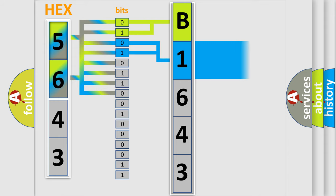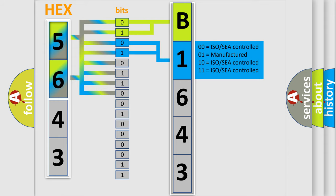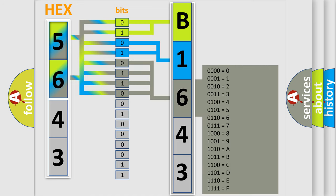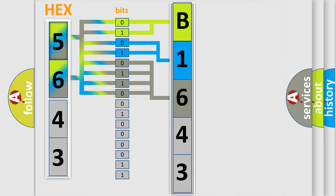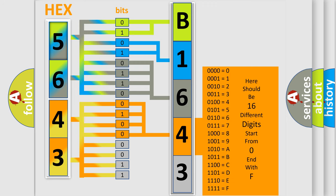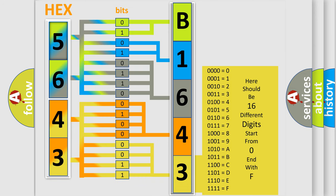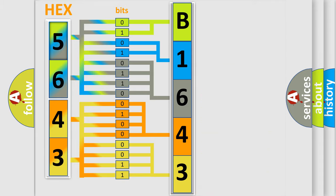The next two bits determine the second character. The last bits of the first byte define the third character of the code. The second byte is composed of a combination of eight bits: the first four bits determine the fourth character of the code, and the combination of the last four bits defines the fifth character. A single byte conceals 256 possible combinations. We now know in what way the diagnostic tool translates the received information into a more comprehensible format.